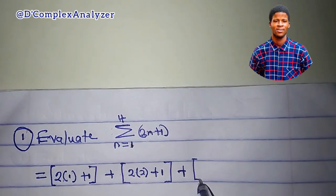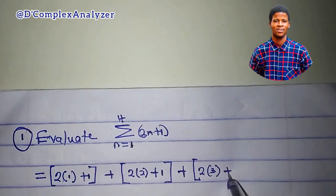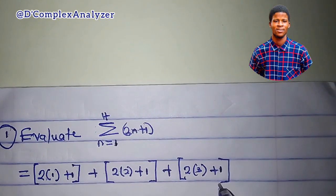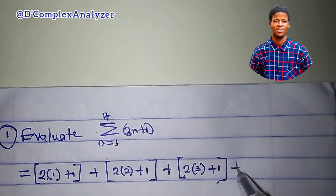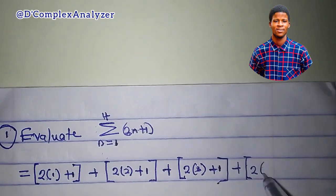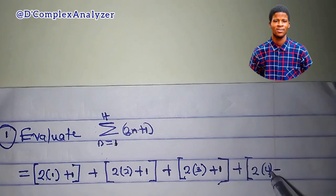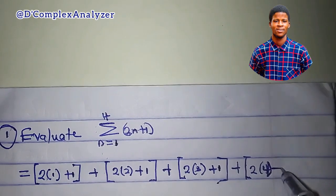Then, plus the third term, we'll have 2 times 3, plus 1. And the last term, because n stops at 4, we'll have 2 times 4, plus 1.